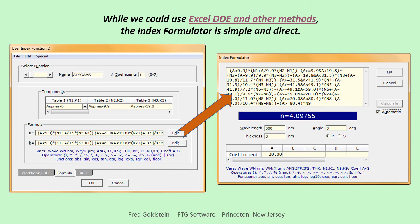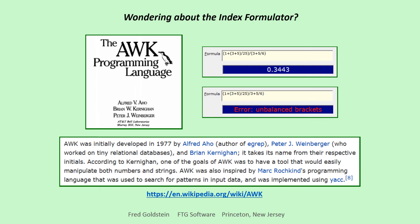18 index tables are utilized, N1 to N9 and K1 to K9. The result is still N equals 4.09755.